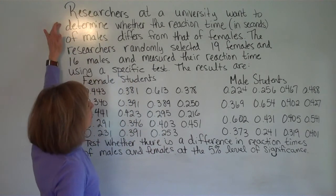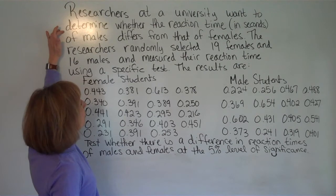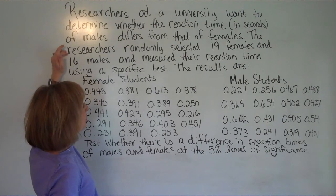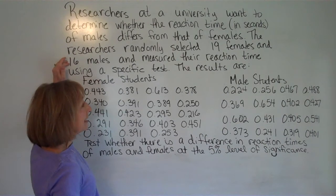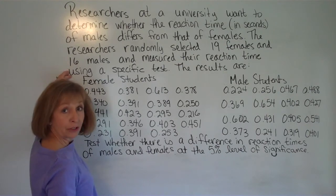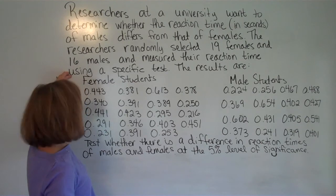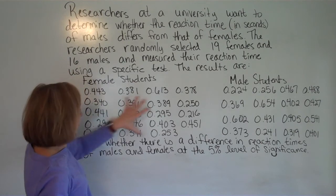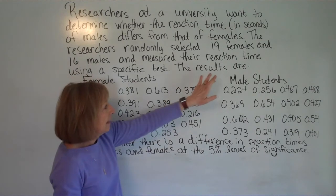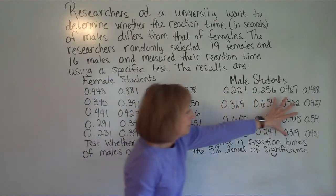Researchers at a university want to determine whether the reaction time in seconds of males differs from that of females. The researchers randomly selected 19 females and 16 males and measured their reaction time using a specific test. The results are female students are these numbers and the male students are these numbers.